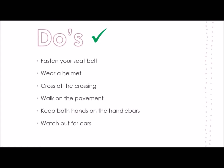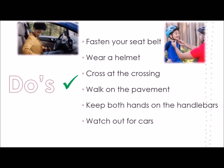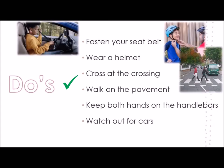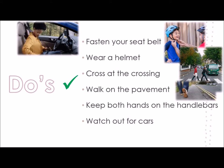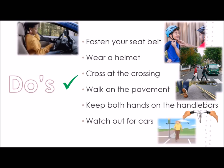Here are the do's — the things that you should do when you are on the street. Fasten your seatbelt. Wear a helmet. Cross at the crossing. Walk on the pavement. Keep both hands on the handlebars. Watch out for cars.